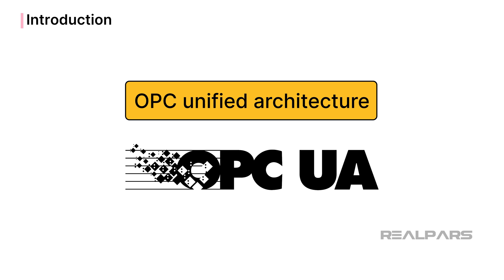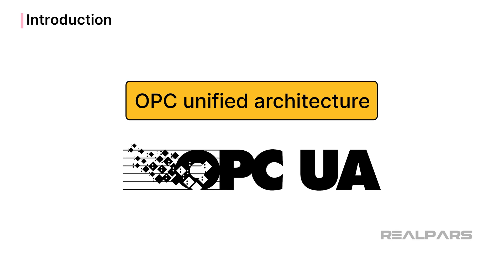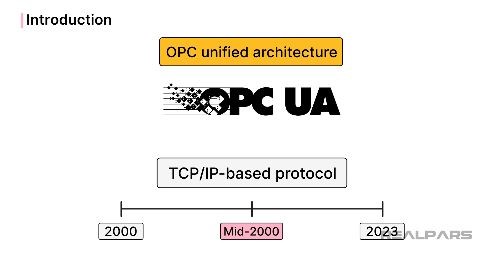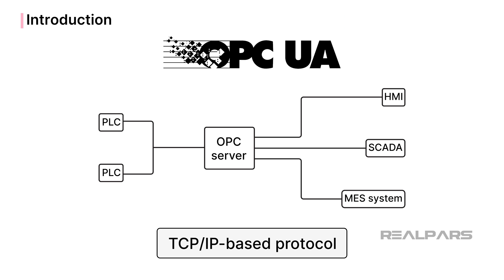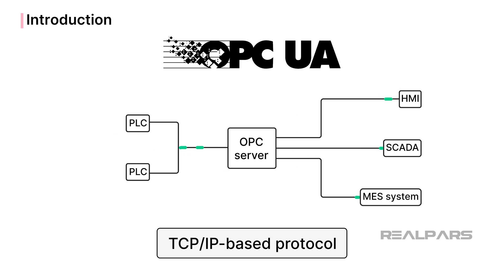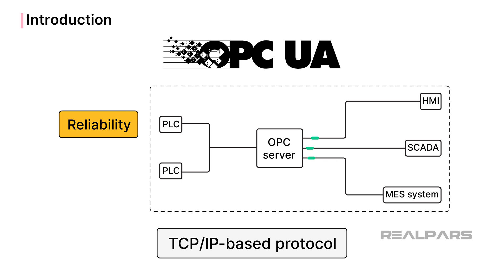OPC Unified Architecture, also known as OPC UA, was developed in the mid-2000s as a TCP/IP-based protocol with the ability to share data at the control system level in real time with high reliability and efficiency.